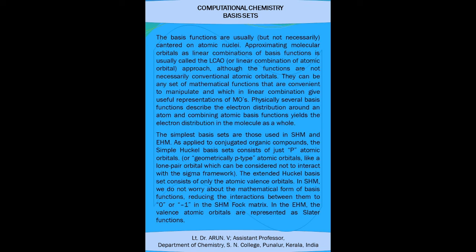These basis functions are usually centered on the atomic nuclei, and the approximate molecular orbitals are constructed from the linear combination of these basis functions — which is called the Linear Combination of Atomic Orbital approach. Physically, several basis functions describe the electron distribution around an atom, and combining these basis functions yields the electron distribution of the whole molecule.